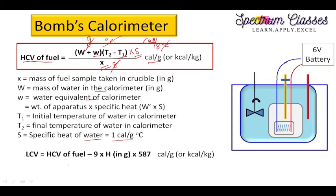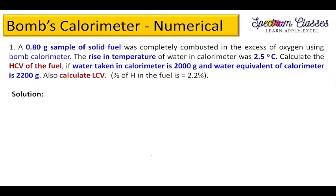For LCV, as explained in my previous video: LCV = HCV − 9 × (weight of hydrogen). If percentage of hydrogen is given, divide by 100, then multiply by the latent heat of steam. In some texts it is given as 580, in others as 587 — whichever is given in your question, please use that value.